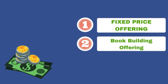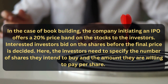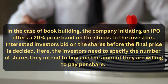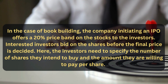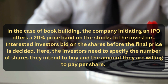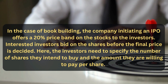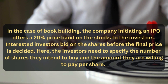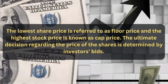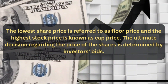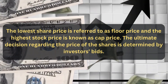Next, and the most popular, is book building offering. In the case of book building, the company initiating an IPO offers a 20% price band on the stocks to the investors. Interested investors bid on the shares before the final price is decided. The investors need to specify the number of shares they intend to buy and the amount they are willing to pay per share. The lowest share price is referred to as floor price and the highest stock price is known as cap price. The ultimate decision regarding the price of the shares is determined by investors' bids.